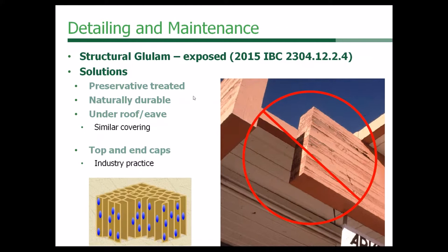Now we'll start looking at code provisions. Here's one that deals with glulam. This is from code section 2304.12.2.4, the 2015 IBC, which says: portions of glued laminated timbers that form the structural supports of a building and are exposed to weather and not fully protected from moisture by a roof, eave, or similar covering shall be pressure treated with preservatives or manufactured from naturally durable or preservative treated wood.